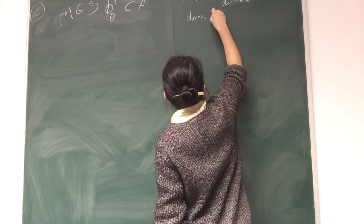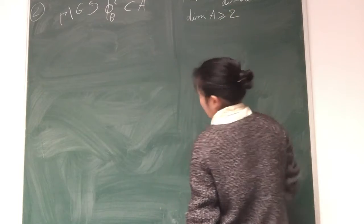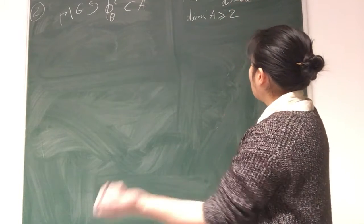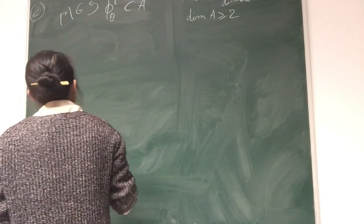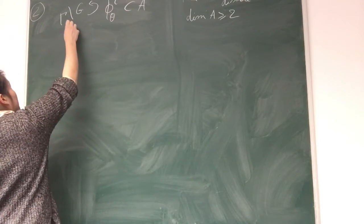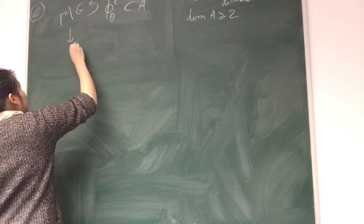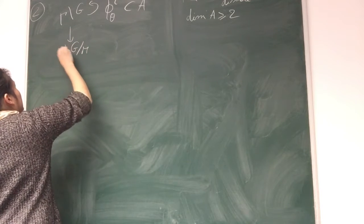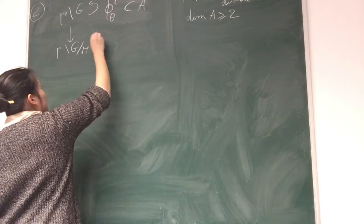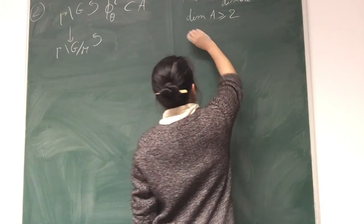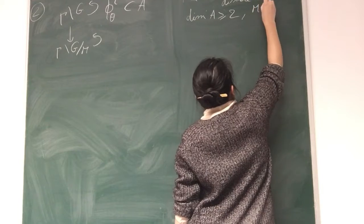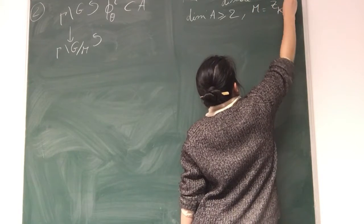Let me assume that the dimension of A is bigger than 2, and that gamma is Zariski dense. So to study this, it is in fact much easier to look at this dynamical system here.